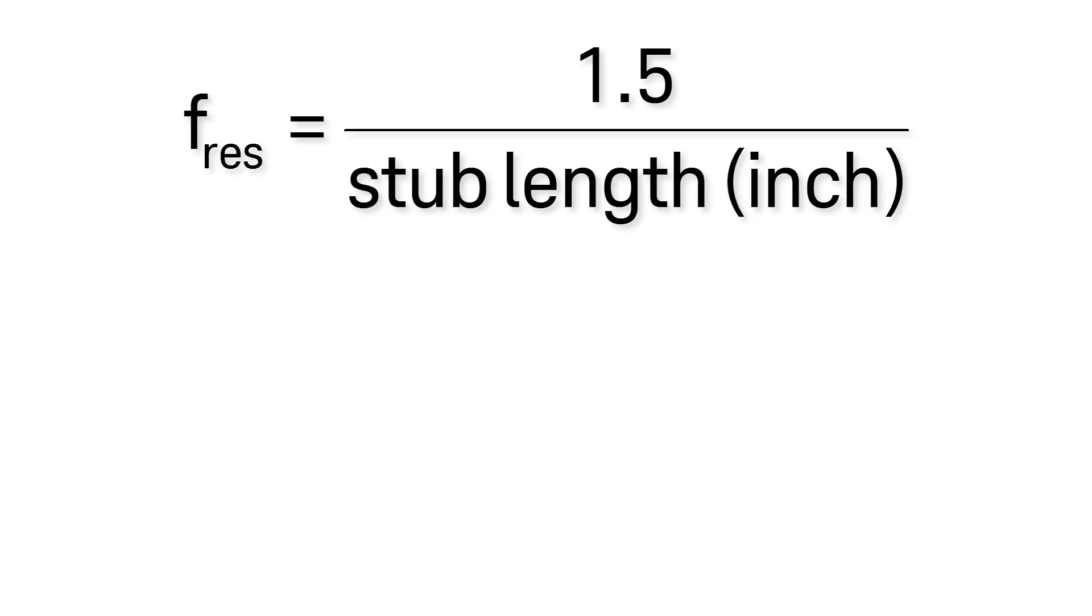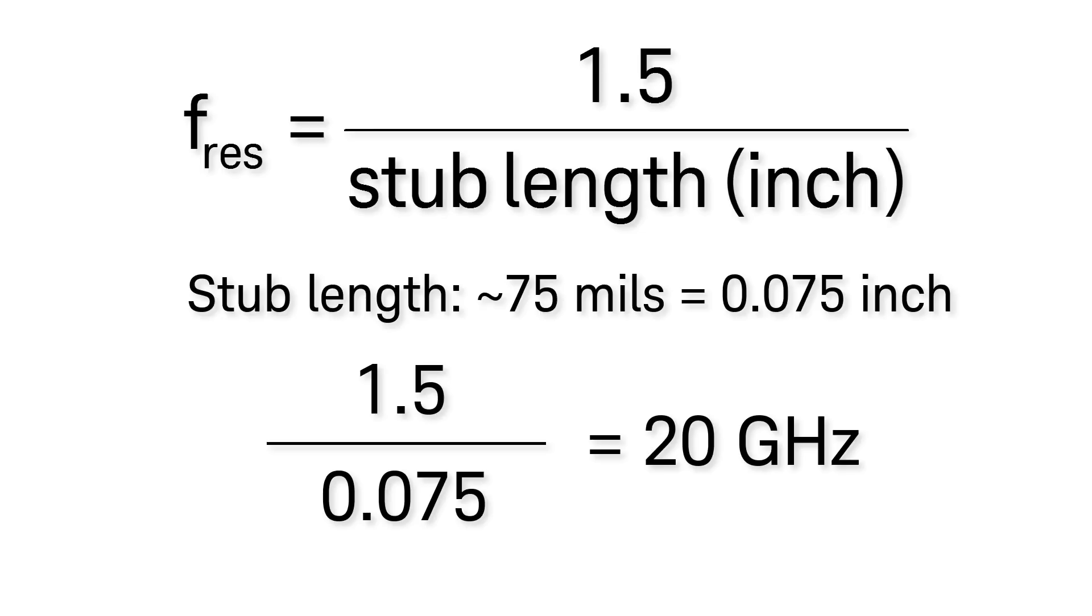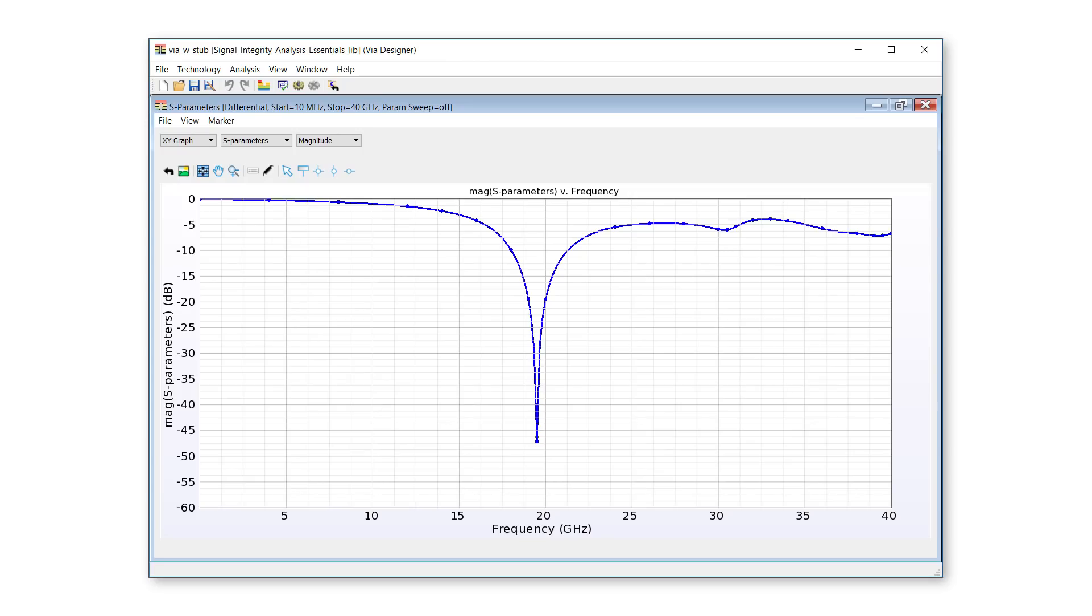Using the rule of thumb for quarter wavelength stub resonance in FR4, we expect a resonance at close to 20 GHz, close to the dip shown in the channel. Simulating the via by itself, we confirm that the resonant frequency is consistent with the one in the mixed mode S parameter analysis.